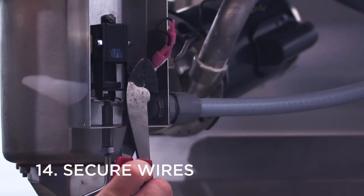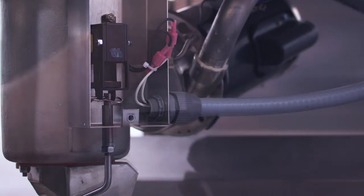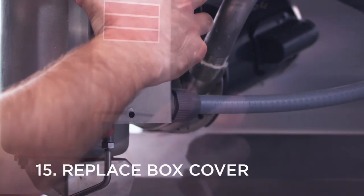Using a zip tie, gather and secure the wires. Replace the drain solenoid box cover.